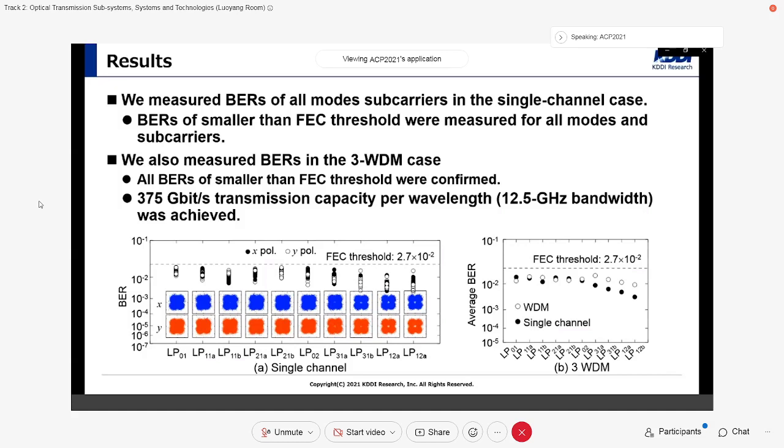We measured BERs of all modes and sub-carriers in the single-channel case, as shown in left-lower figure. BERs smaller than FEC thresholds were measured for all modes and sub-carriers. We also measured BERs in the three WDM cases, as shown in right-lower figure. All BERs smaller than FEC thresholds were confirmed. Thus, 375 Gbps transmission capacity per wavelength was achieved. These results also show the feasibility of real-time weakly coupled MDM transmissions with high mode count.